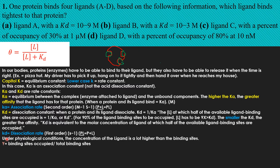Lowercase kd is the dissociation rate — a first-order reaction with units of per second — because you start with one term: the bound complex of protein and ligand. Under physiological conditions, the concentration of ligand is much higher than the binding sites. Y equals the binding sites occupied divided by the total binding sites, so if 50 out of 100 sites are occupied, Y equals 50 divided by 100, which is 0.5.